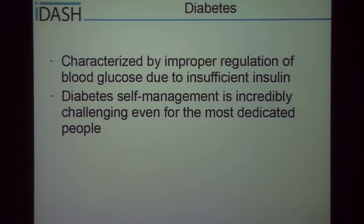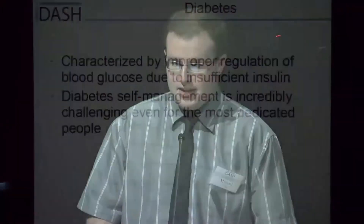Diabetes is characterized by improper regulation of blood glucose due to insufficient insulin, usually caused by either destruction of the cells that produce insulin or decreased sensitivity to insulin itself. Diabetes self-management is incredibly challenging even for the most dedicated individuals because many variables affect blood glucose levels, and these variables vary between people.